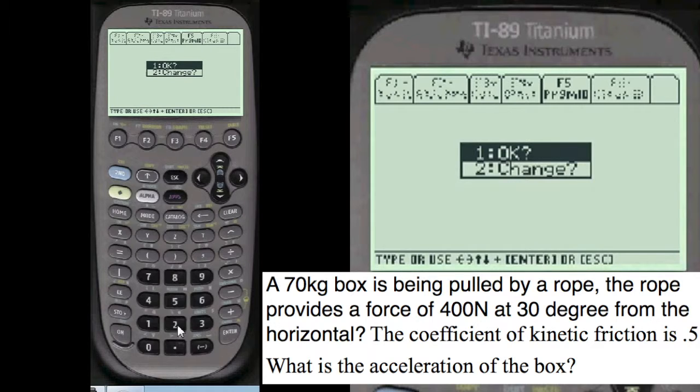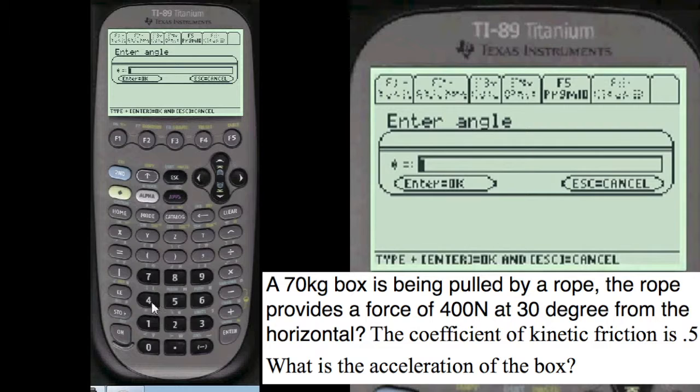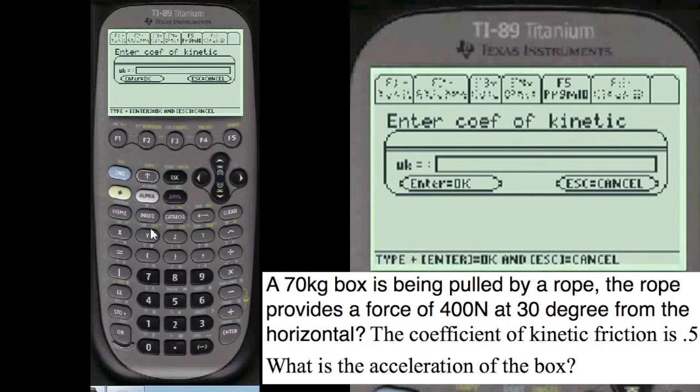I always show you what you've entered. You can check and see if you've entered everything correctly. We haven't. Here UK is five rather than 0.05. So we're going to go back. Choose number two. Enter this stuff again here.